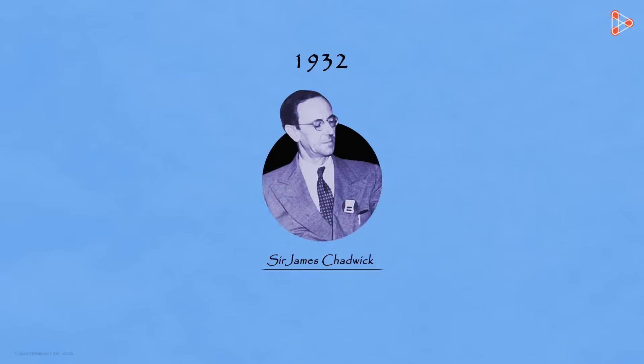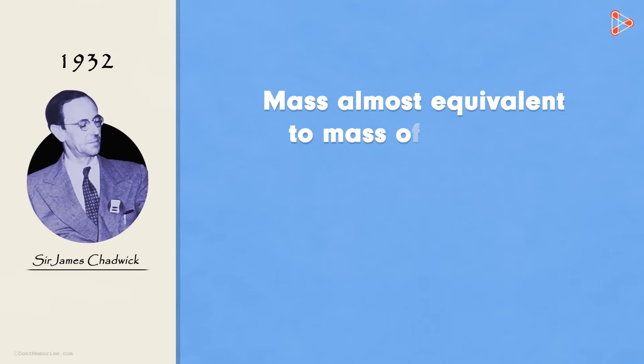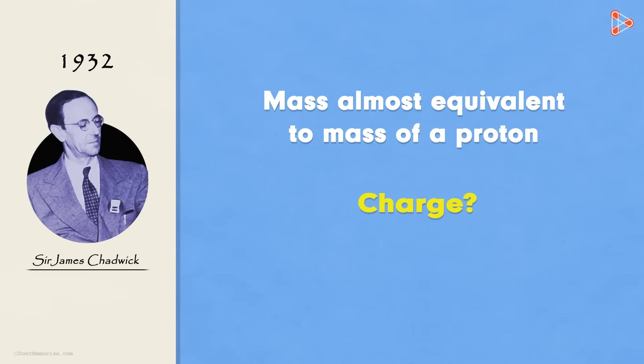It was around the year 1932 when a famous English physicist Sir James Chadwick found the third subatomic particle. He found that the particle had a mass almost equivalent to that of the proton. And what about its charge? Astonishingly, it had no charge.